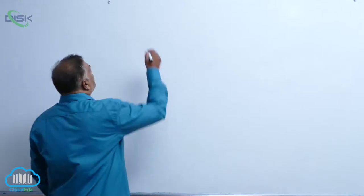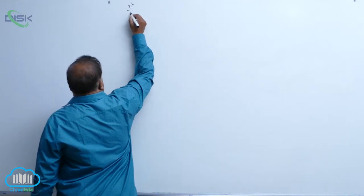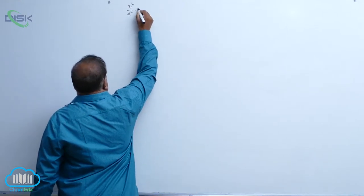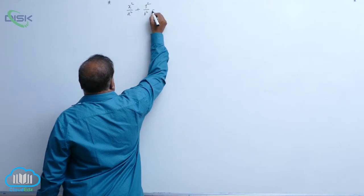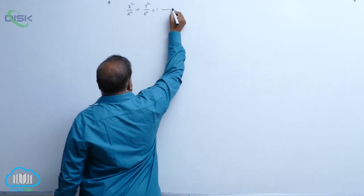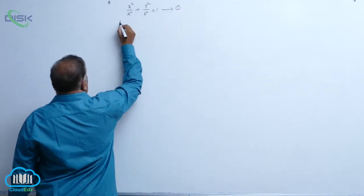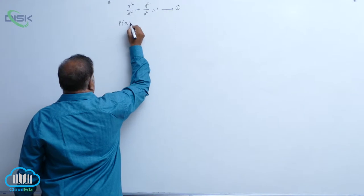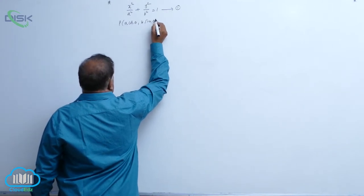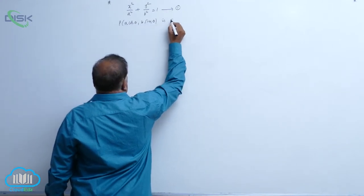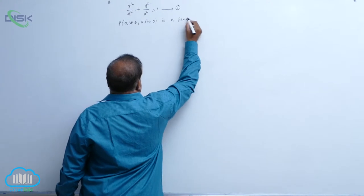Normal equation. x squared by a squared plus y squared by b squared equal to 1, equation 1. P(a cos θ, b sin θ) is a point on equation 1.